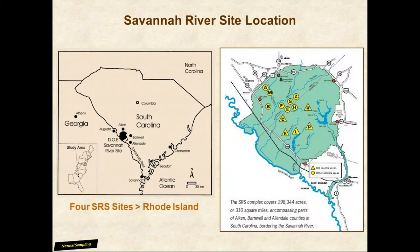The map on the left shows the Savannah River Site location. SRS occupies more than 300 square miles of land along the South Carolina-Georgia border — four SRS sites would cover more area than the state of Rhode Island. Developed during the Cold War period, the government spread out the working sites for security reasons and gave the work areas nondescript names to minimize information releases. The yellow circles marked F and H near the center of the site denote the liquid waste tank farms we'll discuss today.